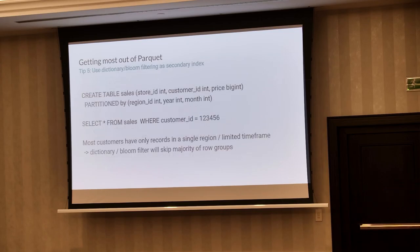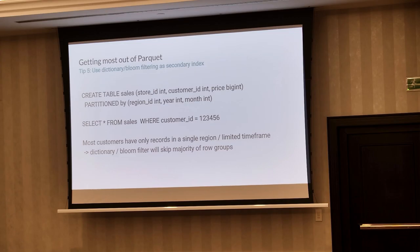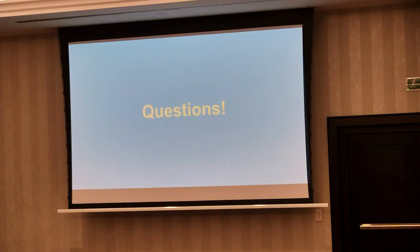One final point about bloom filters: knowing when to use bloom filtering is a bit tricky — it's kind of a secondary index. If there are too many distinct values to use a dictionary, then enabling bloom filtering can be useful. But you have to know your data, because knowing the number of distinct values is not enough. In Impala you can enable it with some table properties, but it depends on the engine how it uses different properties. Thanks for your attention.